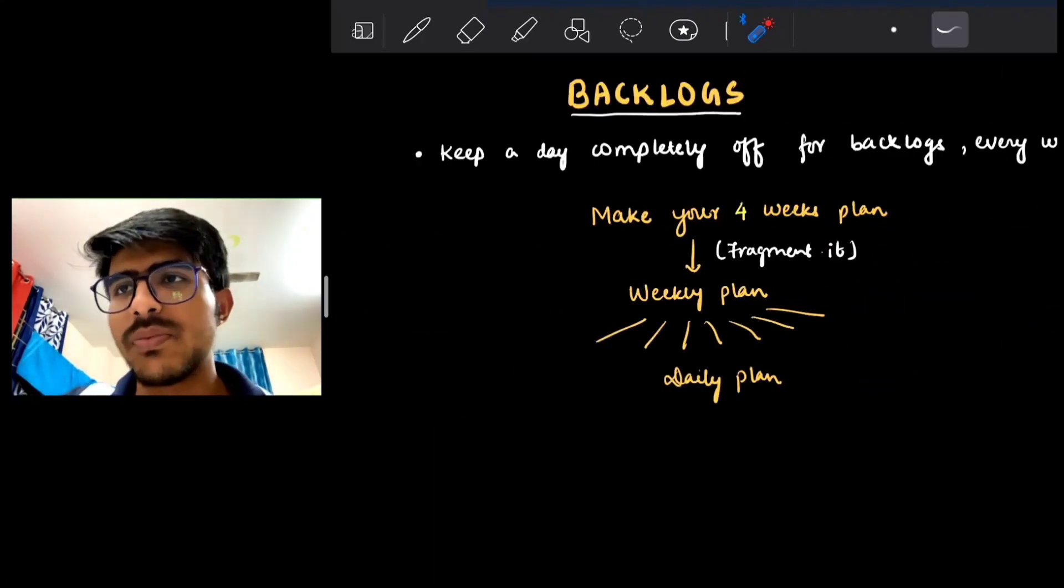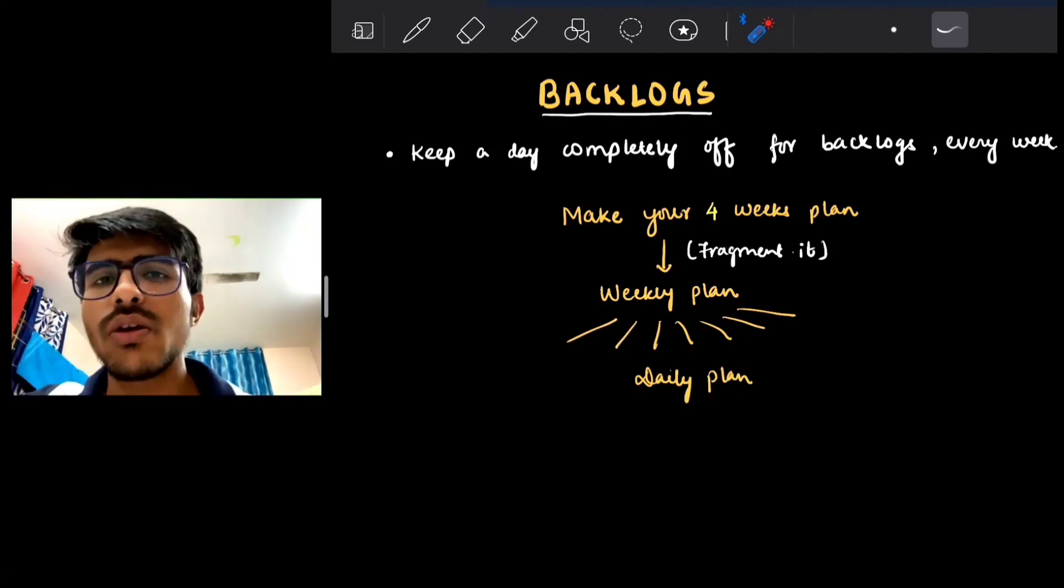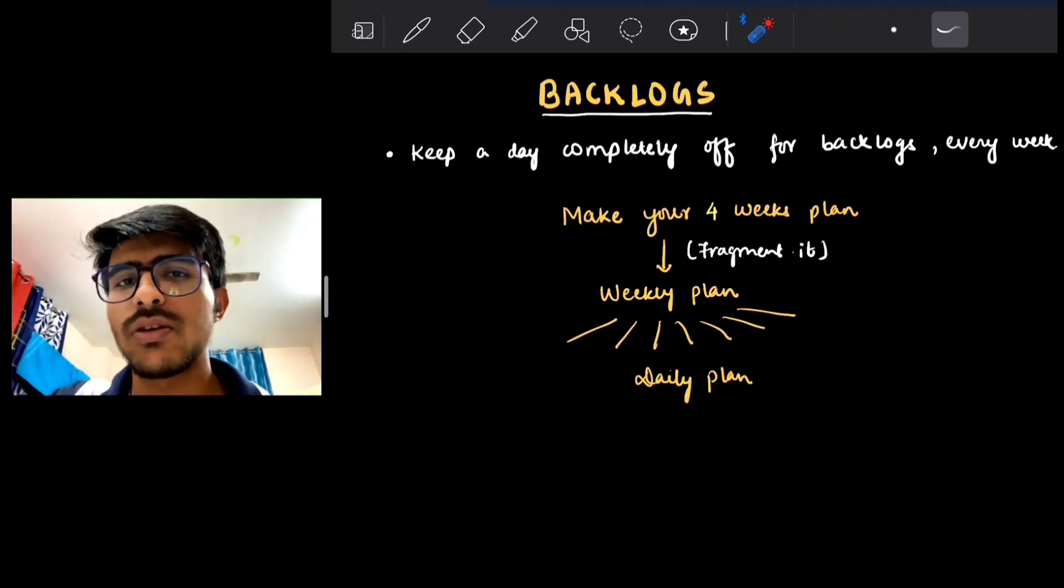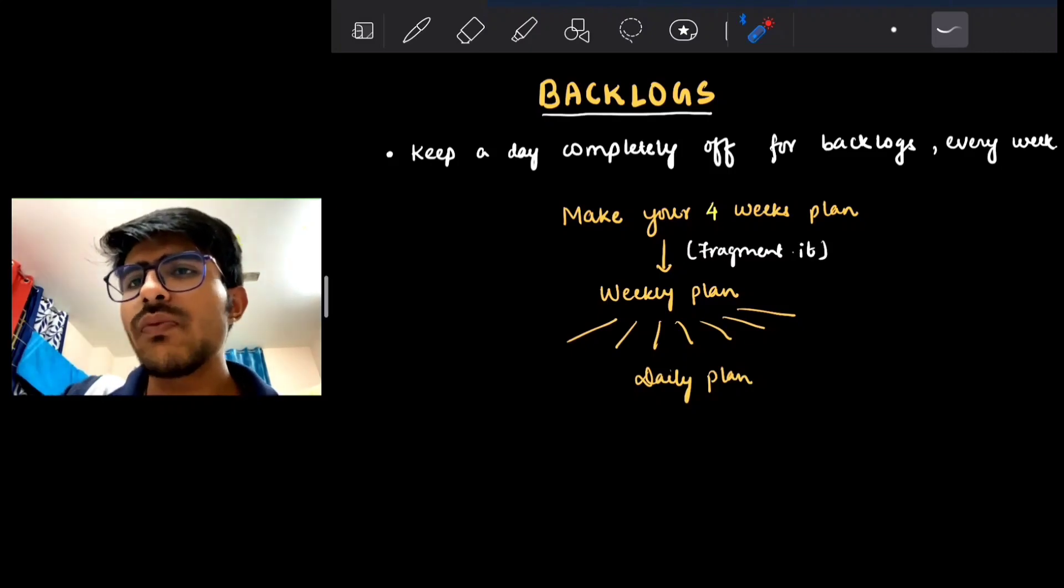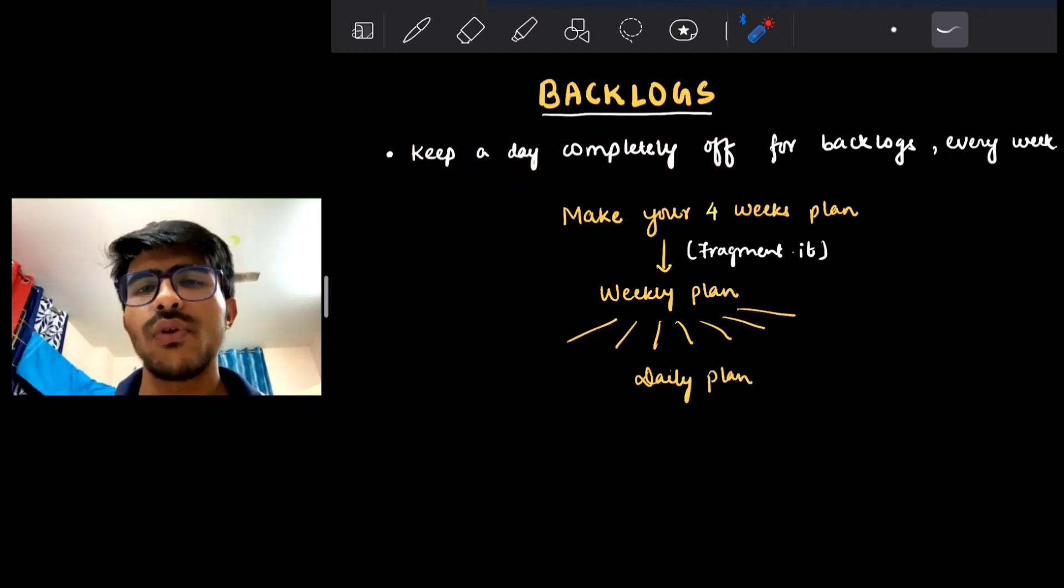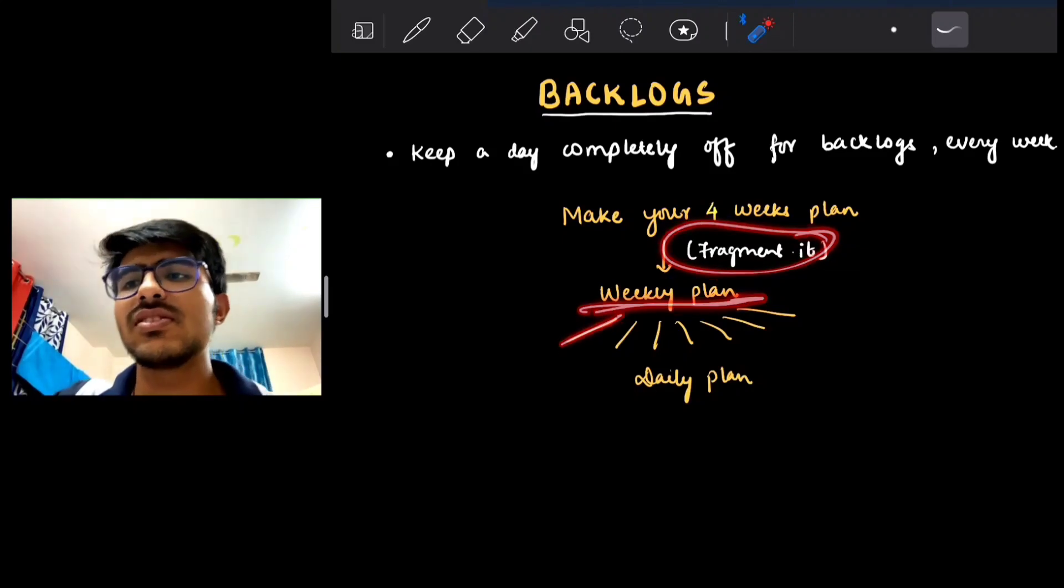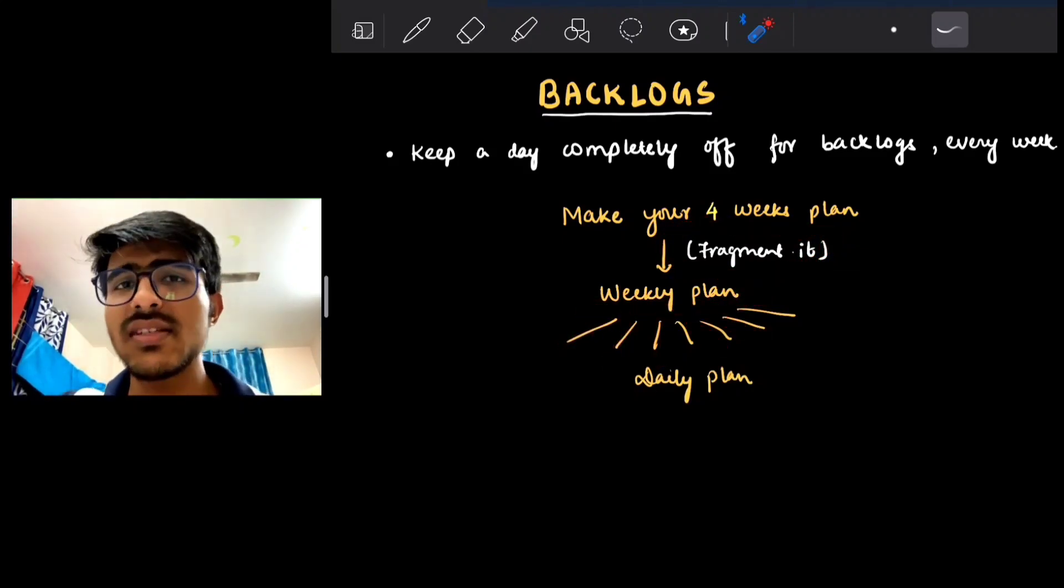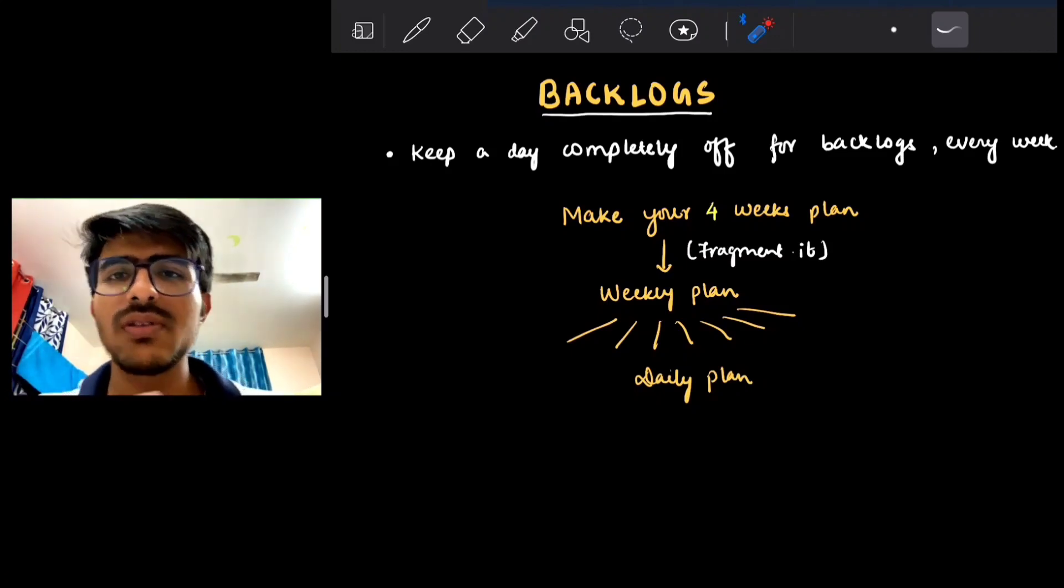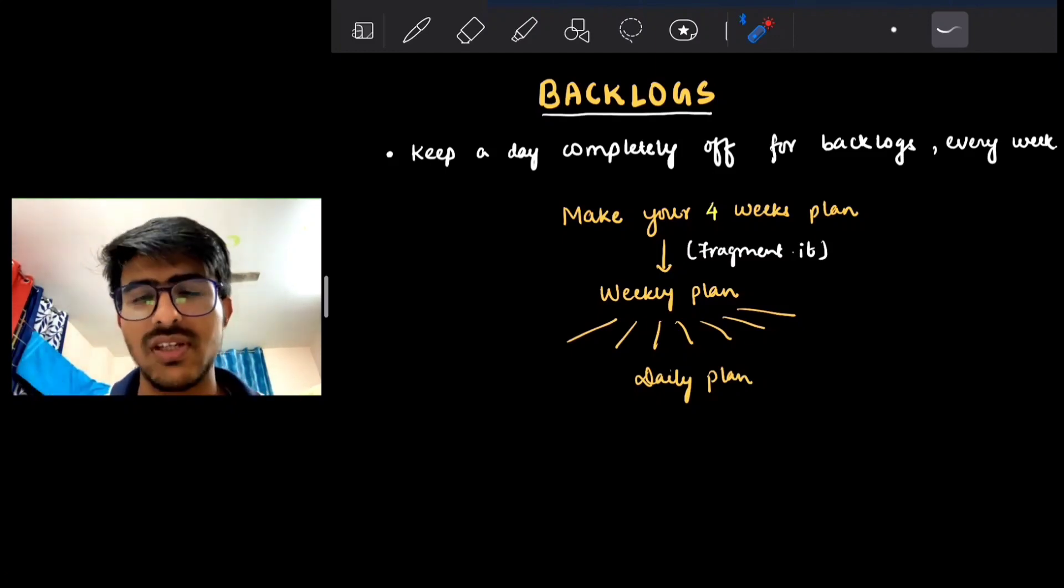Talking about backlogs—we cannot do anything just worrying about them, we have to work. What we can do is keep a complete day off for backlogs every week. We have four weeks, so plan those four weeks, then fragment it into weekly plans, then divide it to daily schedules for six days. Keep the seventh day off for summarizing all six days and to cover up the topics that we couldn't complete in those six days due to unavoidable circumstances. You have to cover your backlogs.